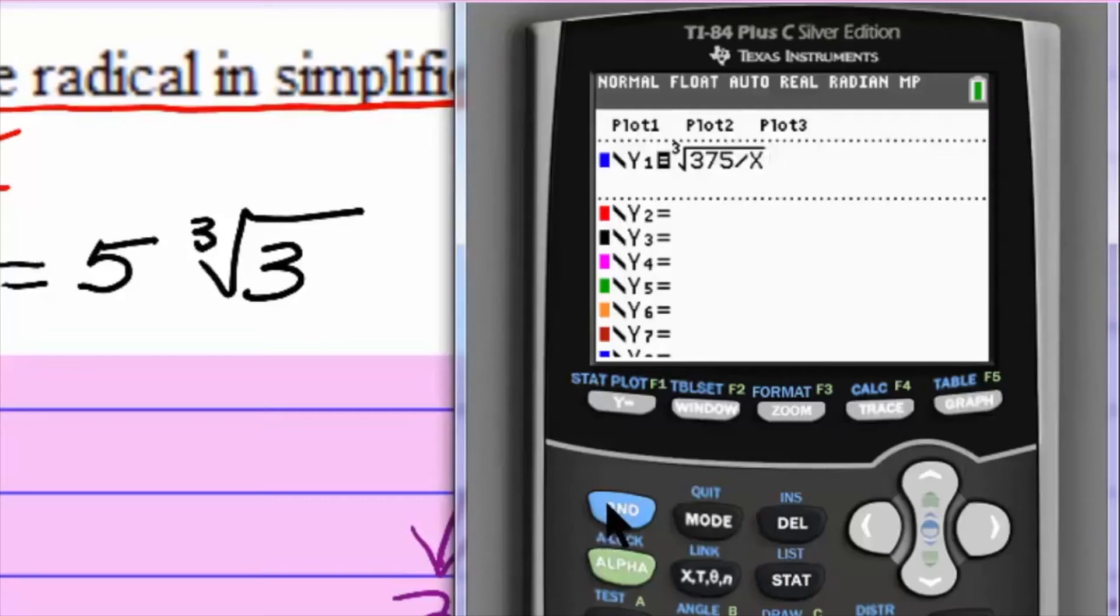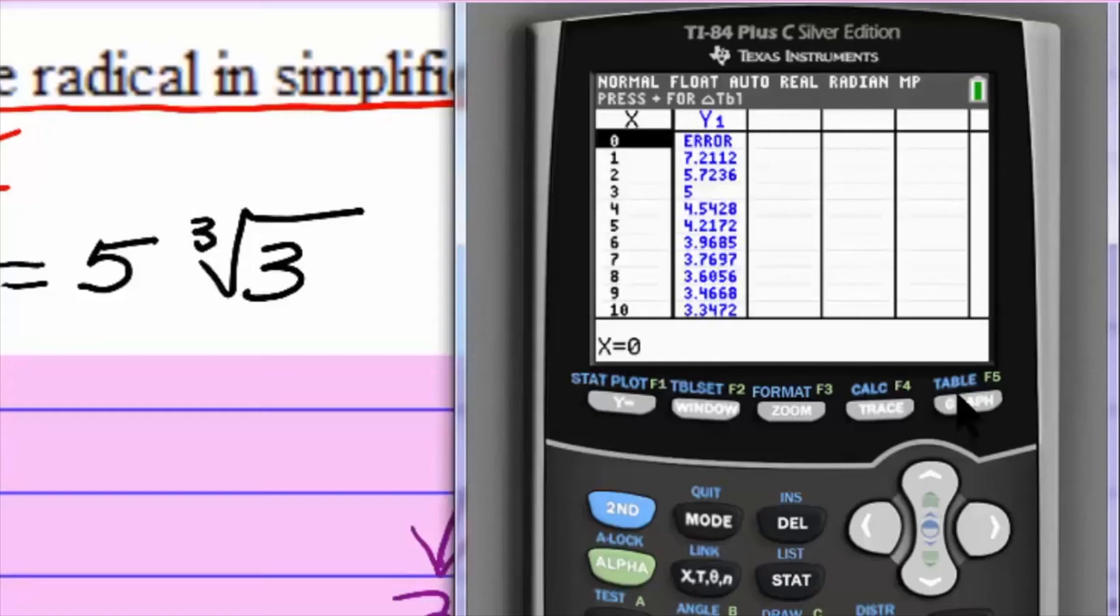Now I'm going to take the cube root of 375 divided by x, and then I'm going to look for points at second graph. There's our answer right here: the y1 number 5, the only number without a lot of decimals, is the number that comes out of the radical, and the number 3, the x number, is the number that stays under the radical.